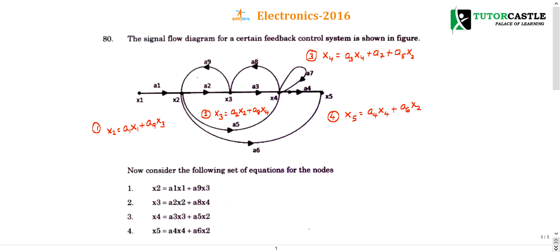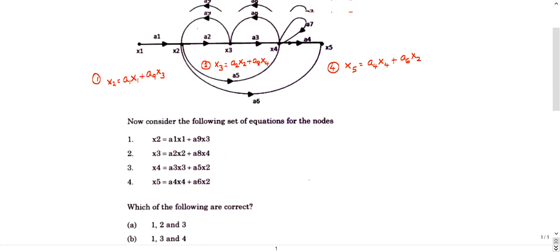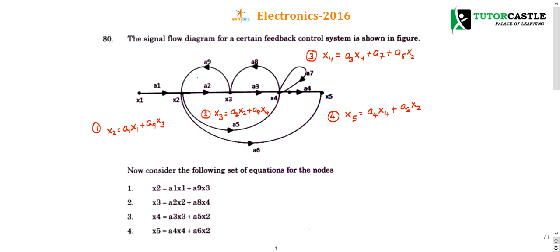Question number 80: the signal flow diagram for a certain feedback control system is given. Now you need to identify which one of the following conclusions is correct. Before we go for the conclusions, let us write the equations based on this.